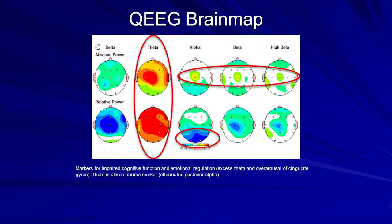He has another marker in the back of the head: his alpha pattern is almost non-existent. Paul Swingle calls that a trauma marker — he also calls it a bully marker. You'll see kids like this and their brains are just going 90 to nothing. They don't idle down. Our brains go into idle when we're sitting relaxed with eyes closed — you just see this beautiful alpha coming out of the back of the head. Not him.